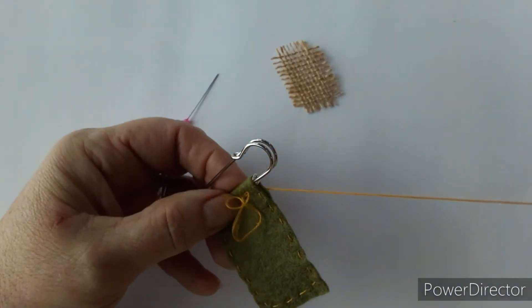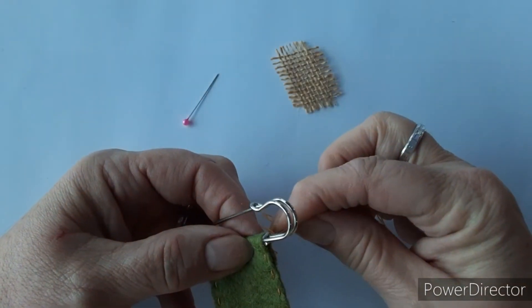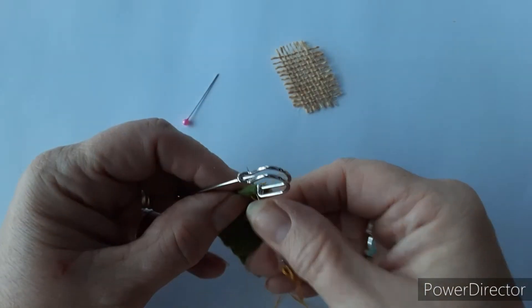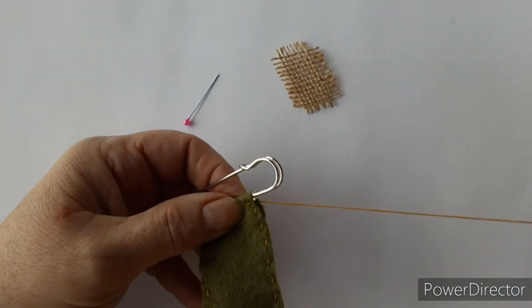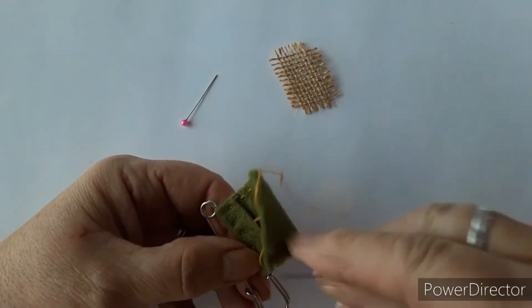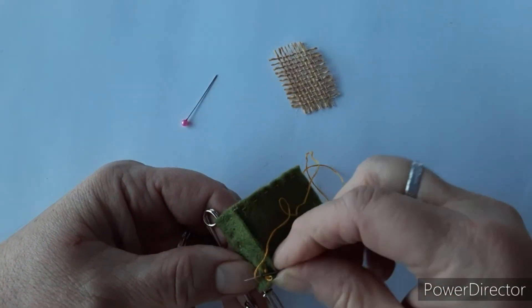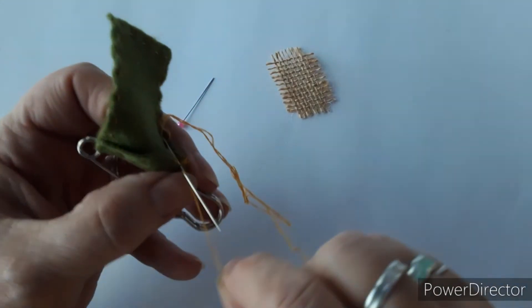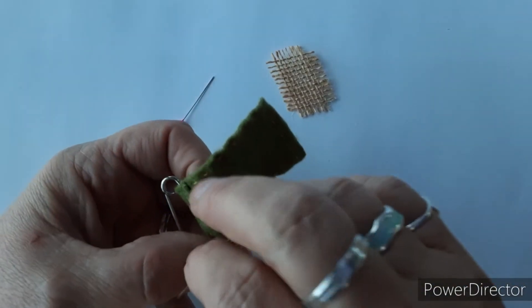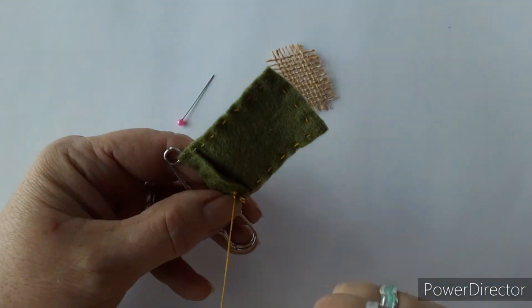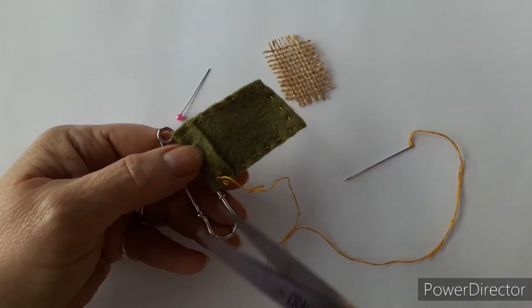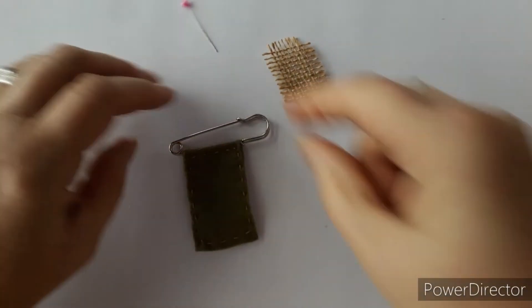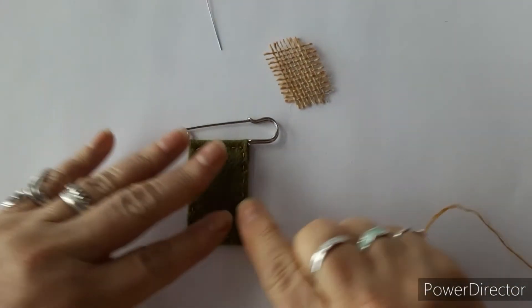Once you've stitched right the way along, you've got to go back to the beginning of the stitches. Just come through to the back and finish off with a little stitch. And then wrap it round to make a knot to secure. Pull it through, and then just snip it off. And that's all the decorative stitching done around the edge.